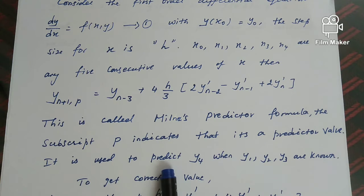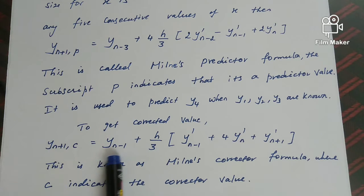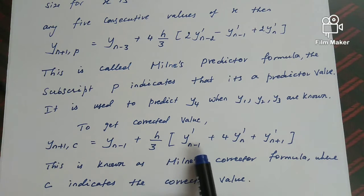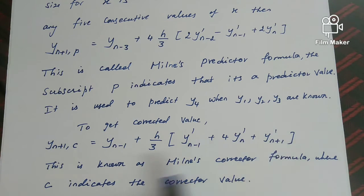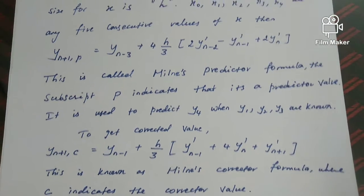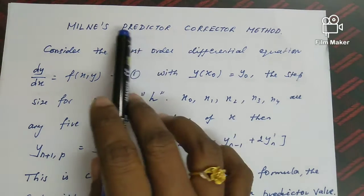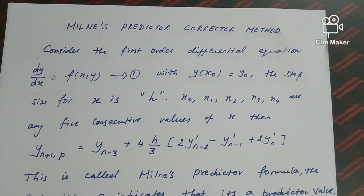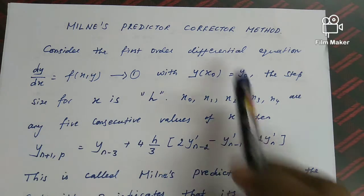The predictor formula is used to predict y₄ when y₁, y₂, y₃ are known. To get the corrected value, the corrector formula is: y(n+1,c) = y(n-1) + (h/3)[y'(n-1) + 4y'(n) + y'(n+1)]. This is known as Milne's corrector formula, where c indicates the corrector value. We are going to predict a value of a given differential equation and then obtain a more accurate corrected value.